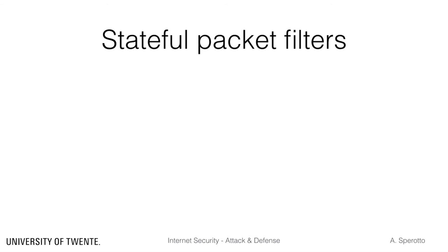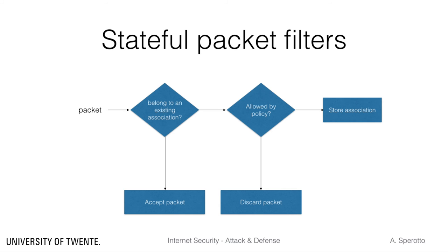An evolution of packet filters are stateful packet filters. In this case, a packet is checked in the same way as for a regular packet filter. However, the firewall also maintains an internal state of existing TCP connections. Therefore, a packet that belongs to a pre-existing TCP connection is directly allowed. A packet that belongs to a new connection is instead matched against a ruleset. If the rules accept the packet, then the state is created for the new connection. Stateful packet filters can deal with protocols using random ports, such as FTP. However, they introduce a performance cost caused by maintaining the internal state.